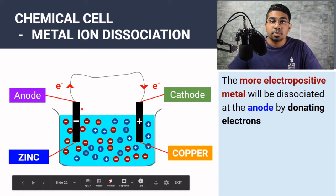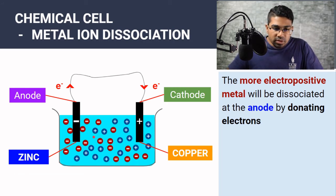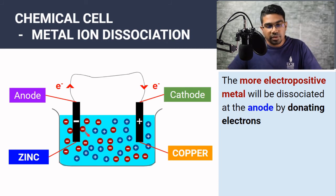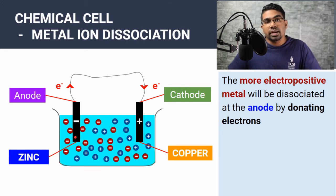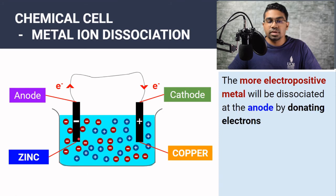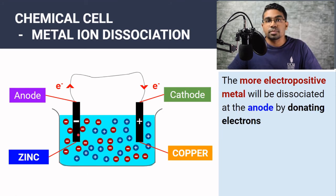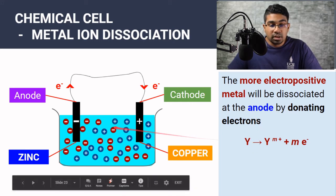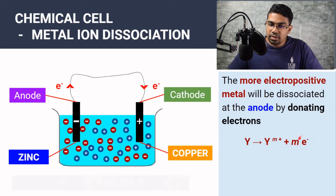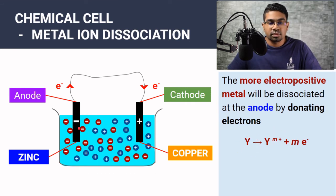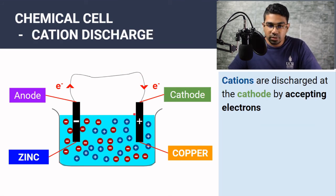The driving factor for electron flow is the electropositivity of the metals, and the source of the electrons is the more electropositive metal itself. Unlike in an electrolytic cell, there is no discharge of anions here. The electrons come from the metal electrode, which donates electrons and becomes ionized — dissociated into ions. Over time this metal electrode becomes thinner and thinner. The general equation is: Y → Y^(m+) + m e⁻, where m depends on how many valence electrons the metal donates.